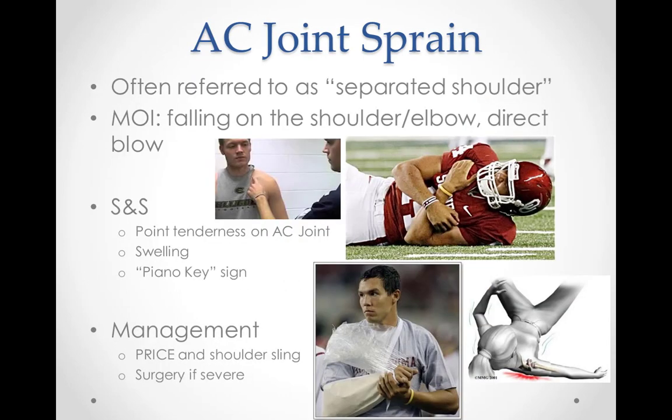The human shoulder joint is more mobile than any other joint in the body, making it very susceptible to instability and injury. A separated shoulder, sometimes referred to as a shoulder sprain or acromioclavicular joint separation, occurs when the ligaments that hold the collarbone to the shoulder blade are injured or separated. The severity of AC joint separation can range from mild to severe. In mild cases the ligaments are stretched, however in severe cases the ligaments are completely torn.